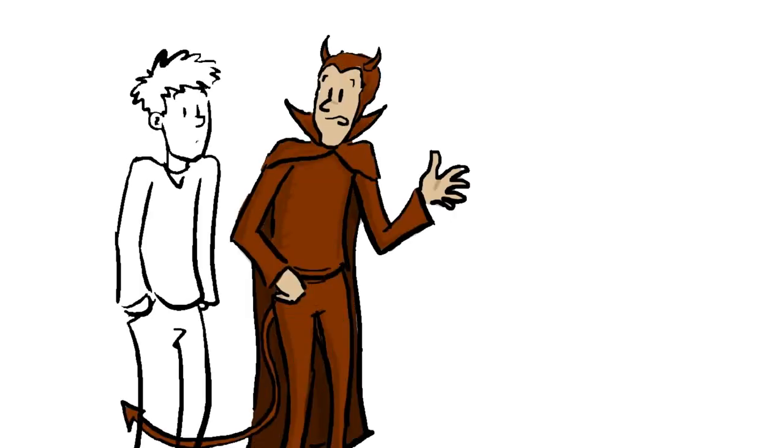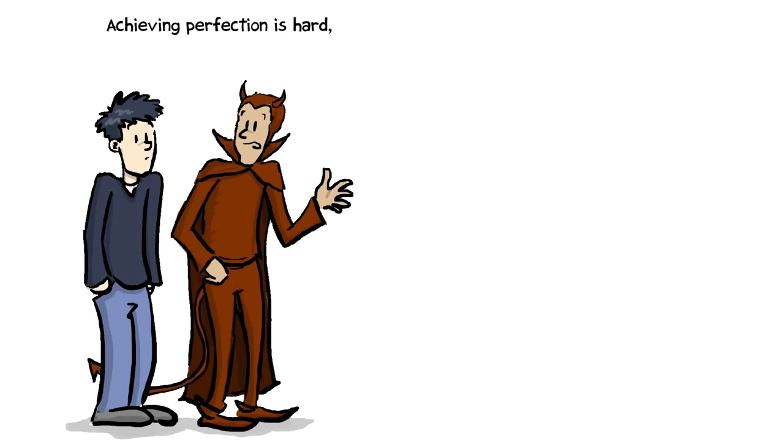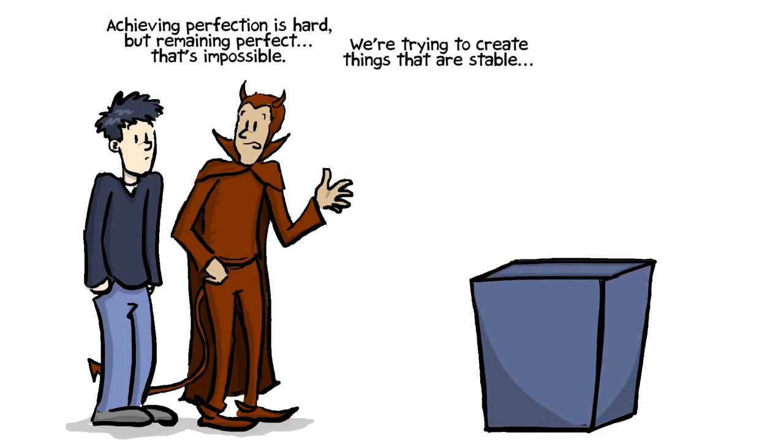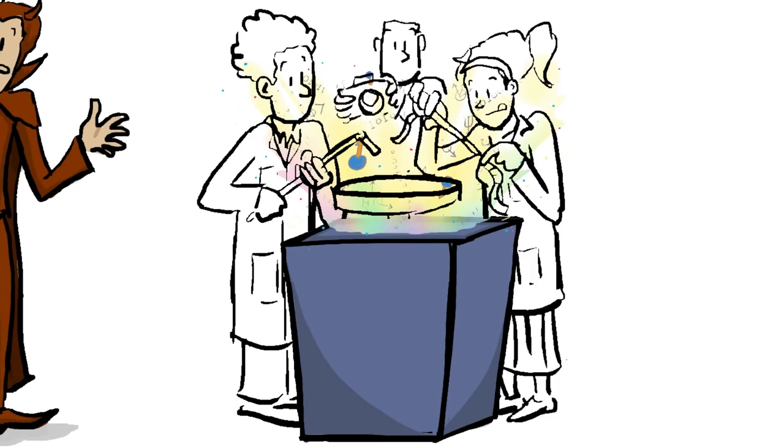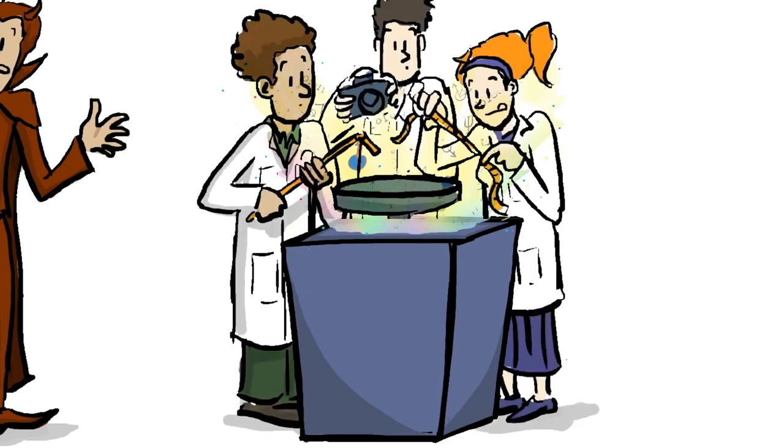It's one of these things like, I don't know if it was Faust that said it, that achieving perfection is hard, but remaining perfect, that's impossible. A lot of what we're trying to do also creates things that are stable, right? Because you can have the most exotic quantum state, but unless you can probe it, measure it, evolve it in some way that you want, steer it, it's going to be useless.